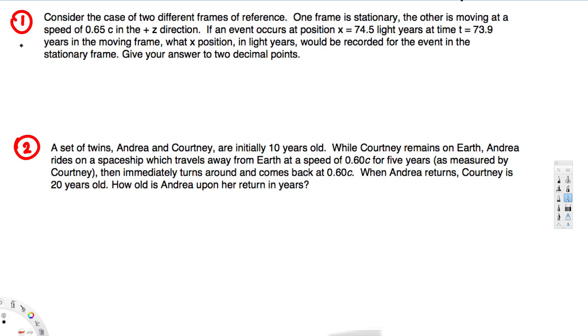Hey, what's going on guys? Let's try these problems. The first question asks: Consider the case of two different frames of reference. One frame is stationary, the other is moving at a speed of 0.65c in the plus direction. If an event occurs at position x = 74.5 light years at time t = 73.9 years in the moving frame, what x position in light years would be recorded for the event in the stationary frame?